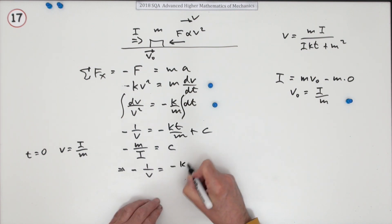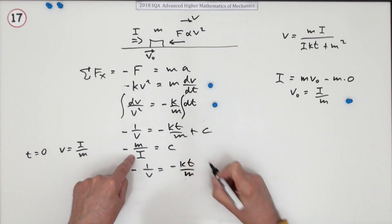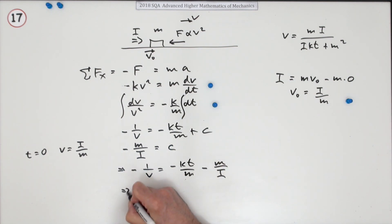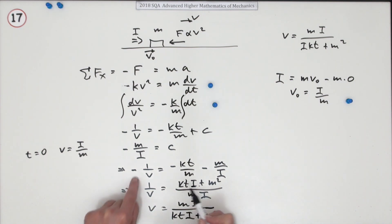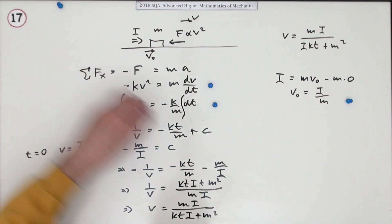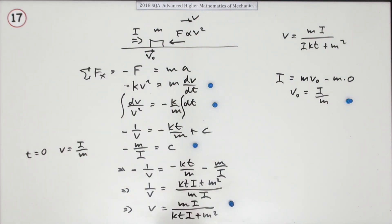Negative 1 upon V is negative K T upon M plus C. Notice that C is a negative, so it's minus M upon I. So you can get rid of all those negatives. So 1 upon V, multiplying everything by negative 1, add the fractions together. Now it's just the same as before. So that numerator is multiplied by I, that numerator is multiplied by M, and then flip it over. M I over K T I plus M squared. Because we flipped all those negatives over. So there was find the constant and then rearrange it.